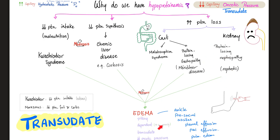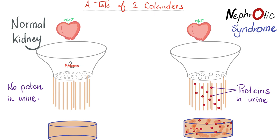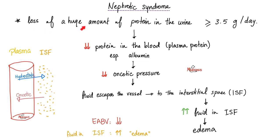This can lead to edema. A tale of two colanders: a normal kidney is like a good colander, leaving no debris behind. But a kidney with nephrotic syndrome is like a colander with very wide holes, letting some protein particles end up in the urine. That's not good. In nephrotic syndrome, you're losing a huge amount of protein in the urine — more than 3.5 grams every day.